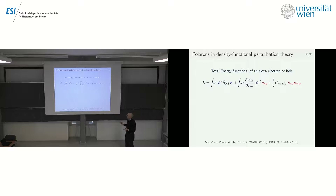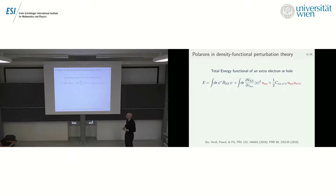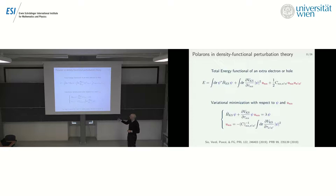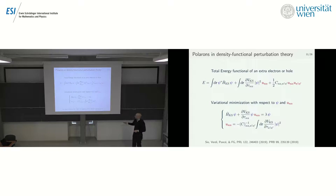We have an expression for the energy as a functional of the wave function and atomic displacements. Doing a variational minimization with respect to the wave function and displacements, enforcing normalization using Lagrange multipliers, we obtain two coupled equations. The derivative with respect to the wave function gives an equation like a standard Kohn-Sham equation with an extra term. Setting displacements to zero recovers the standard Kohn-Sham equation. The second equation gives the atomic displacements once the wave function is found. This is a coupled nonlinear system.